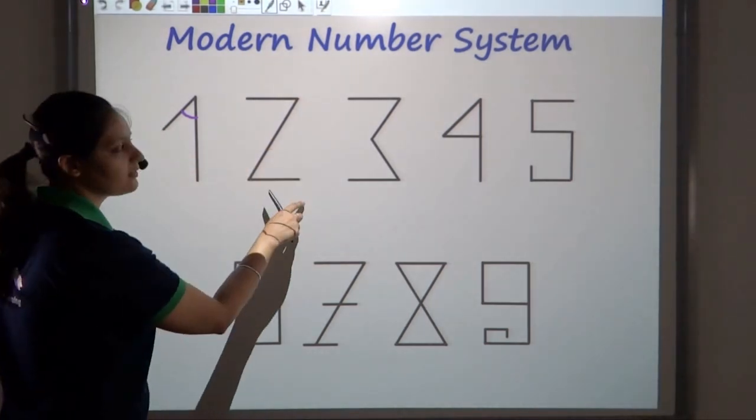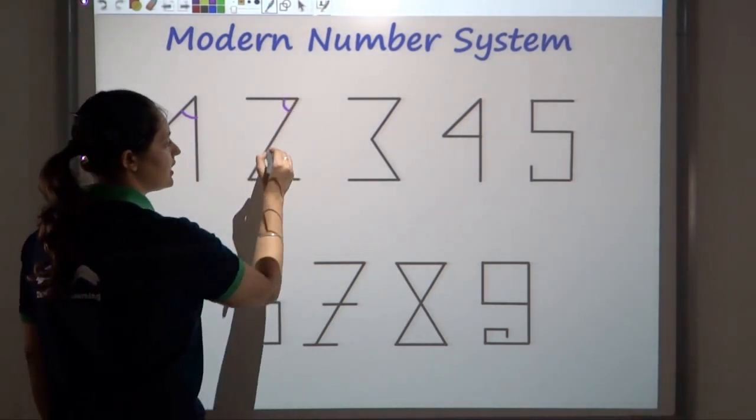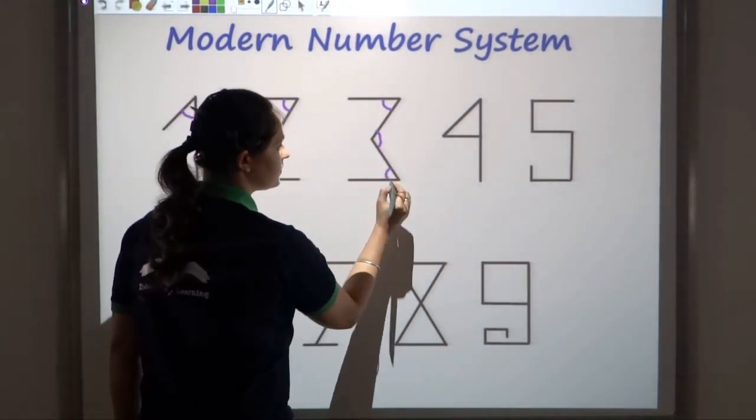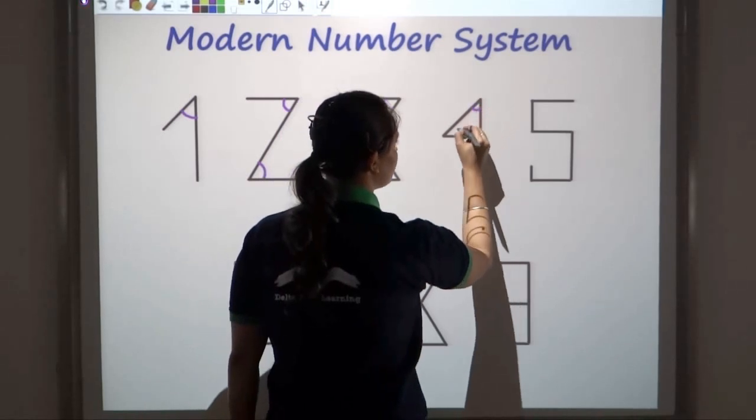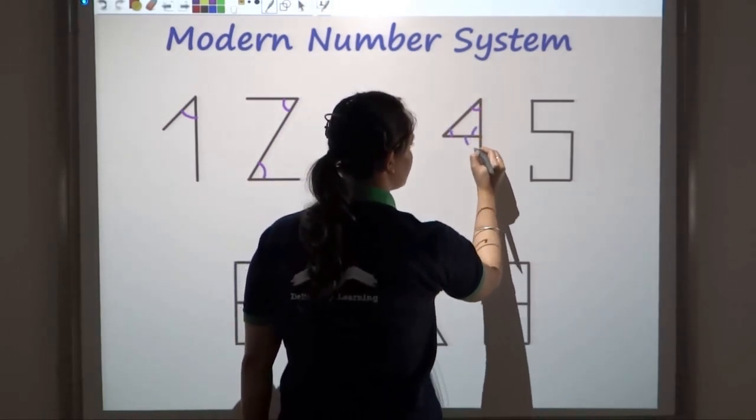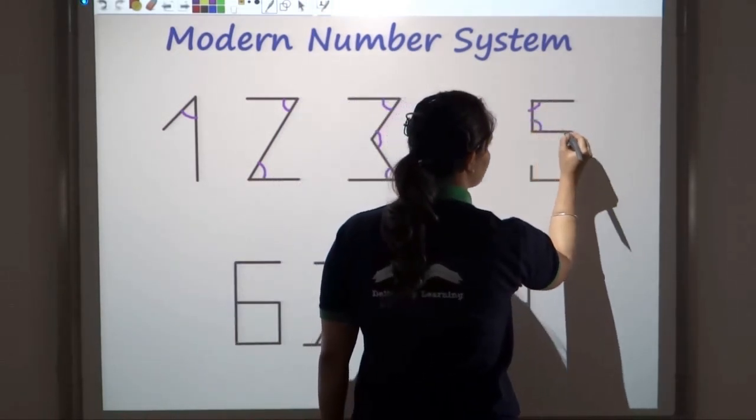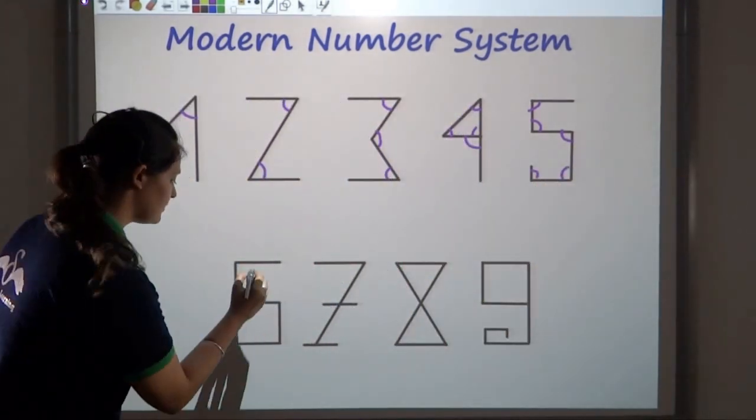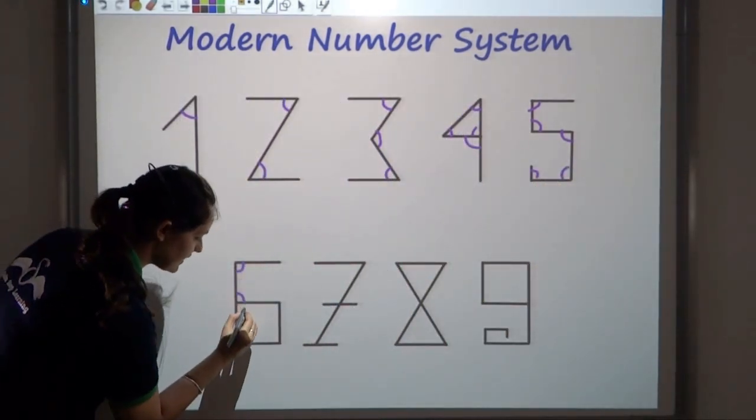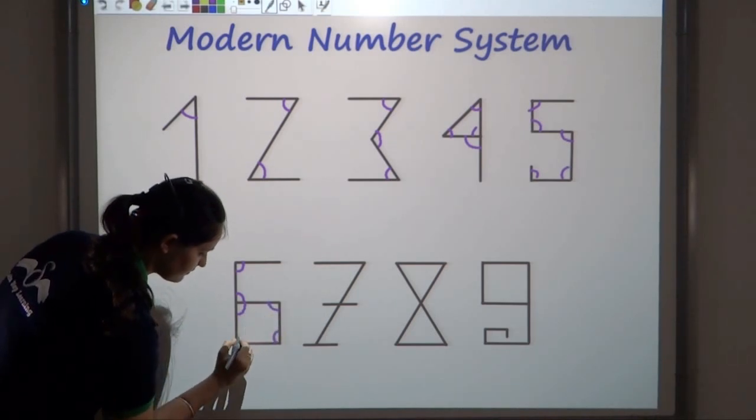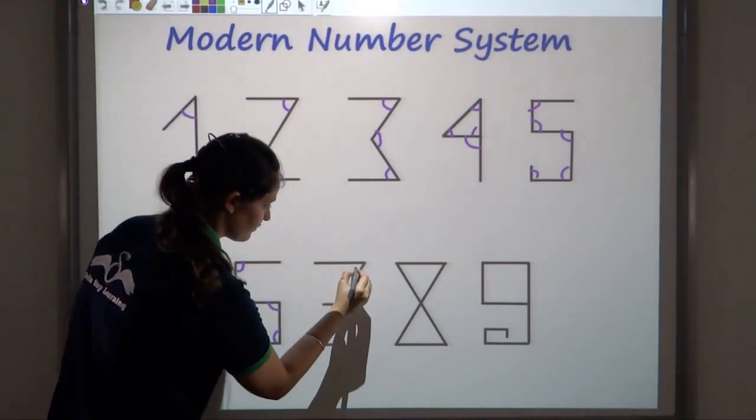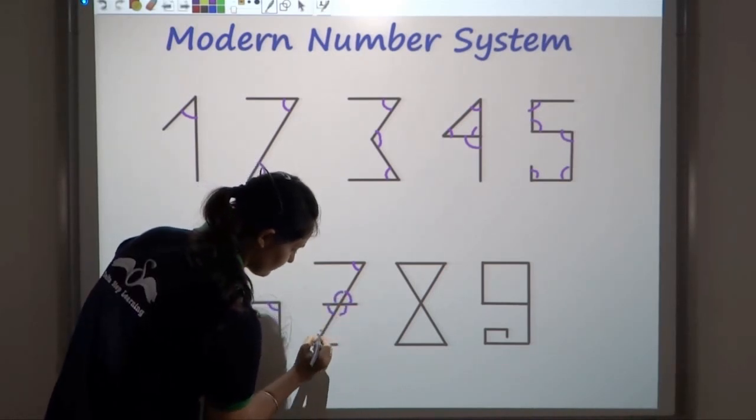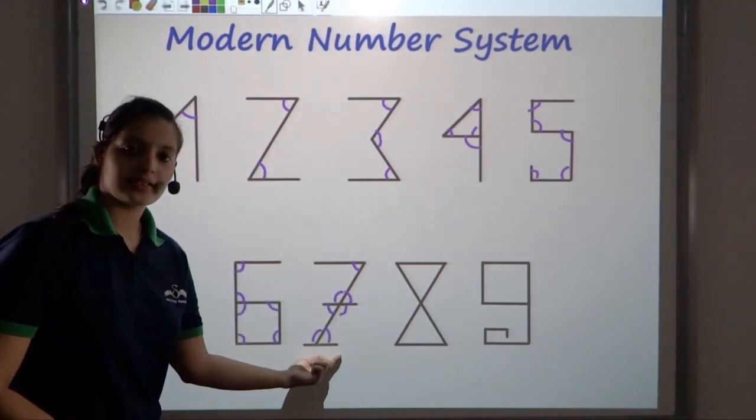Similarly, for two, we have this symbol because it makes two angles, three because of three angles. Similarly, four for the four angles, five makes five angles. Again, six would make six, seven angles in case of seven.